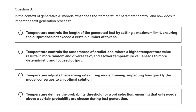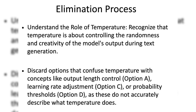Option D: temperature defines the probability threshold for word selection, ensuring that only words above a certain probability are chosen during text generation. To solve this question, the first step is to understand the purpose of each option and then eliminate ones that clearly don't fit. Recognize that temperature is about controlling the randomness and creativity of the model's output during text generation. Discard options that confuse temperature with output length control (Option A), learning rate adjustment (Option C), or probability thresholds (Option D).